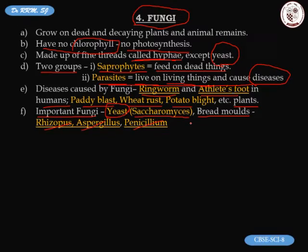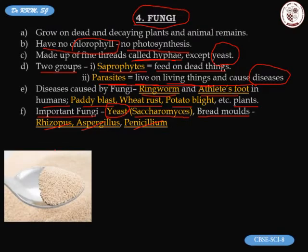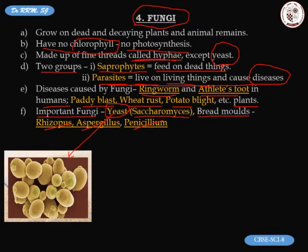Yeast is what you buy from the market to bake bread. Under a microscope, yeast appears as round structures, sometimes attached to each other because they reproduce by budding. Yeast helps us in the production of both bread and wine.